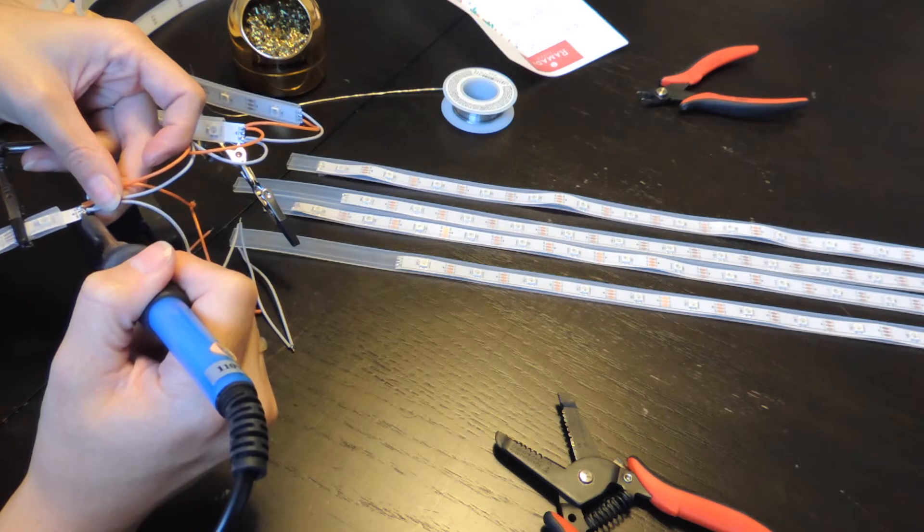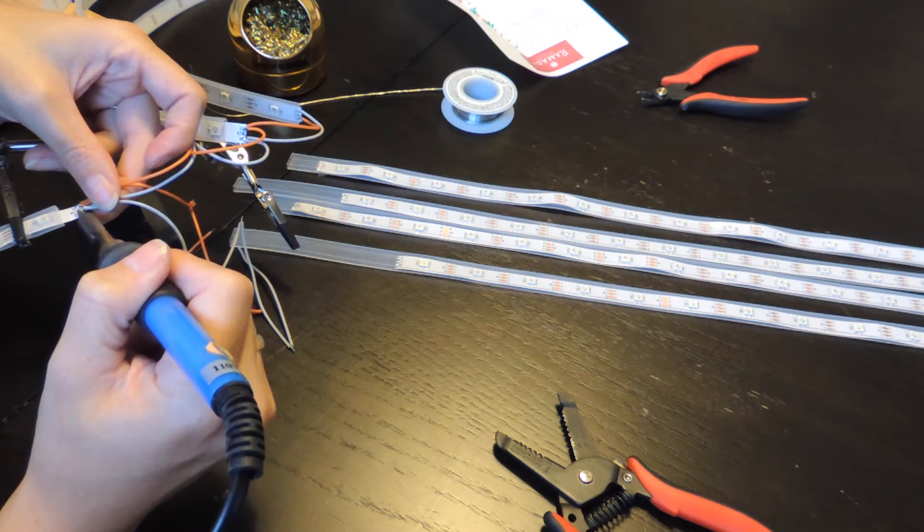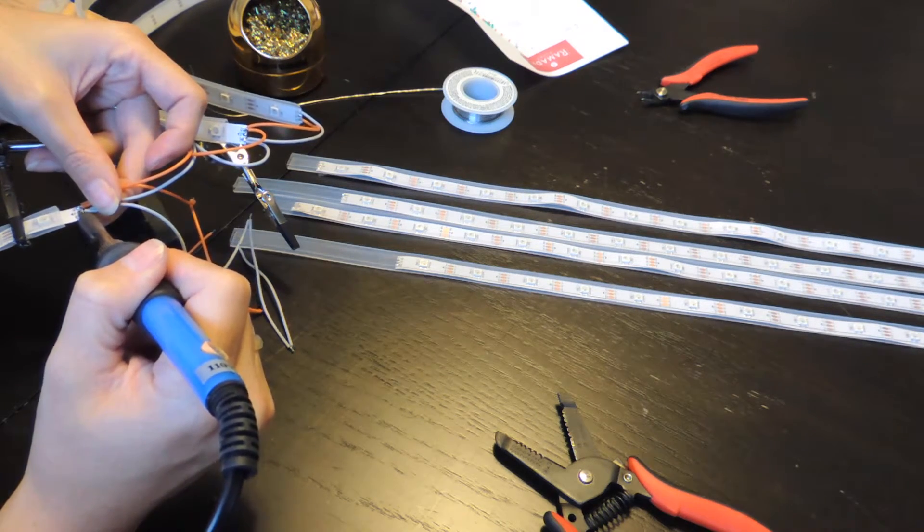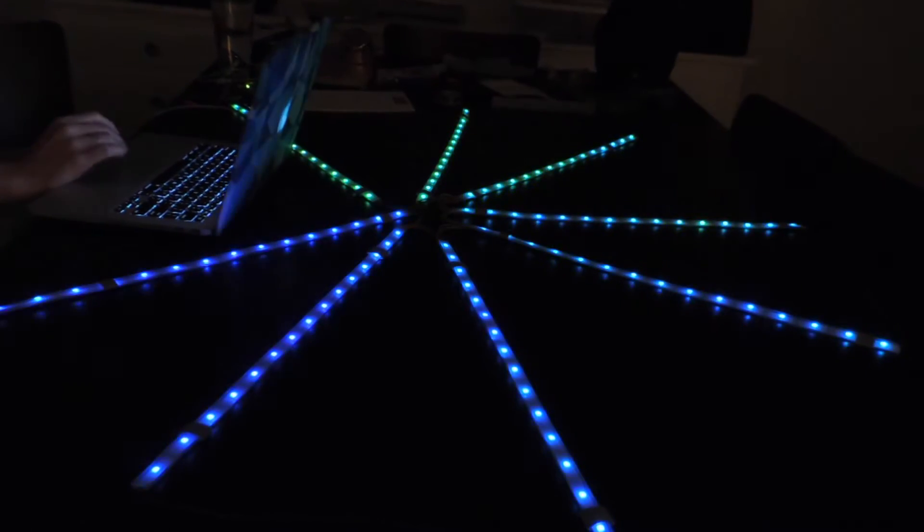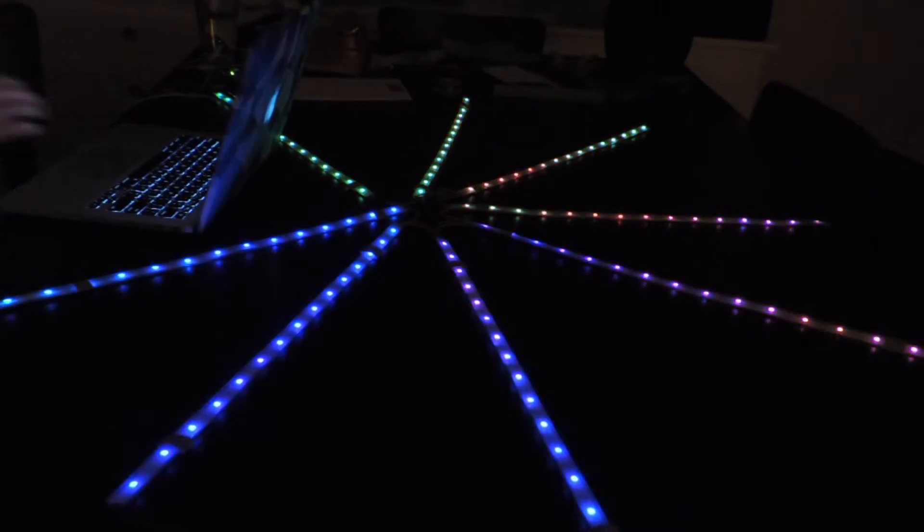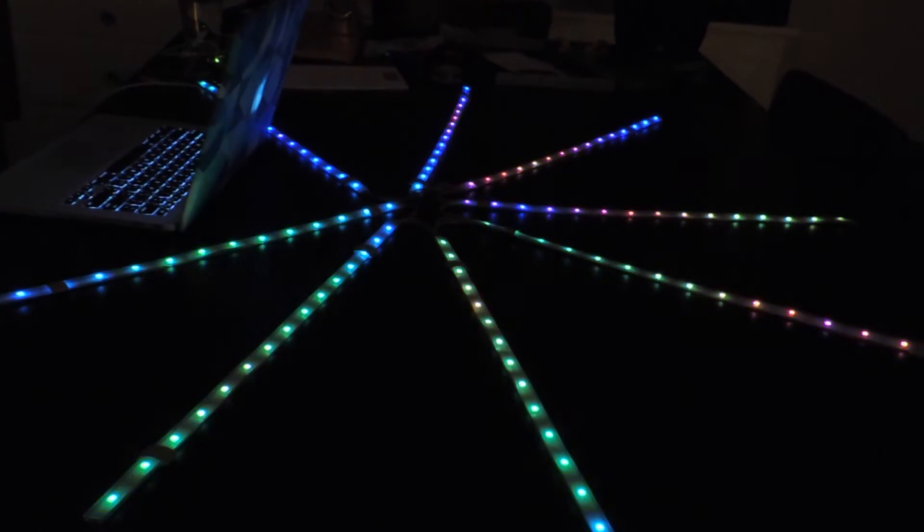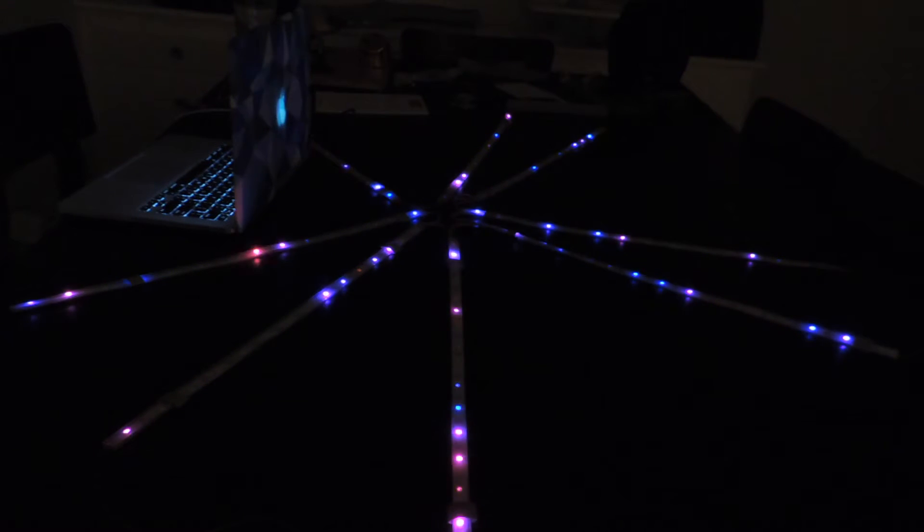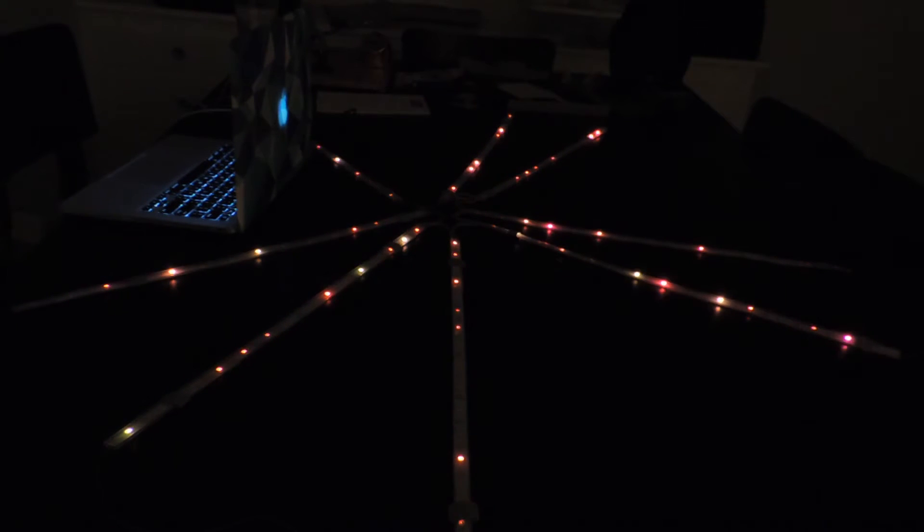Then I tested the strips with a basic sketch to make sure everything works. Here's the XY matrix from the Fast LED library. I also used the demo reel, which is beautiful and looked great.